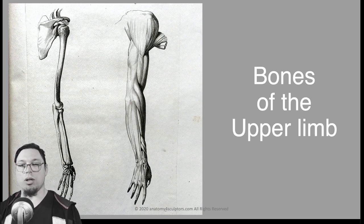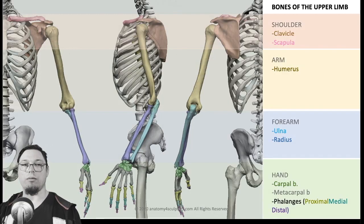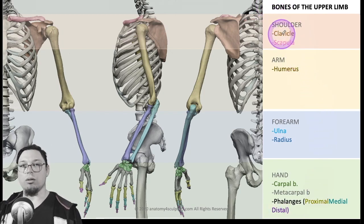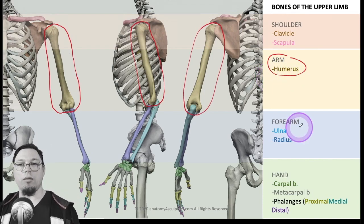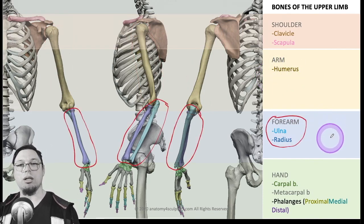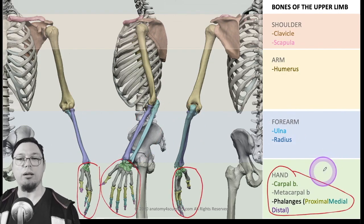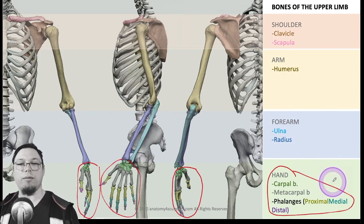Today's topic is the bones of the upper limb, which can be divided into four groups: the shoulder, which includes the clavicle and scapula; the arm, which includes the humerus; the forearm, with the ulna and radius; and finally the hand, with the carpal bones, metacarpal bones, and phalanges.